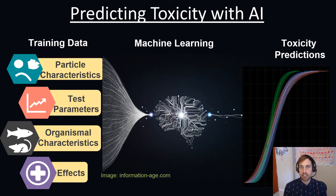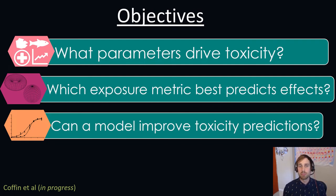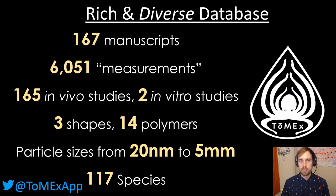We used machine learning to predict toxic effect concentrations of microplastics using the Tomex database. The objectives of this modeling are to determine the drivers of toxicity, which exposure metrics best predict effects, and determine the viability of using such models to predict toxicities. The Tomex database is rich and diverse, with 167 manuscripts, over 6,000 measurements, 3 shapes and 14 polymers, and particles ranging from 20 nanometers to 5 millimeters.